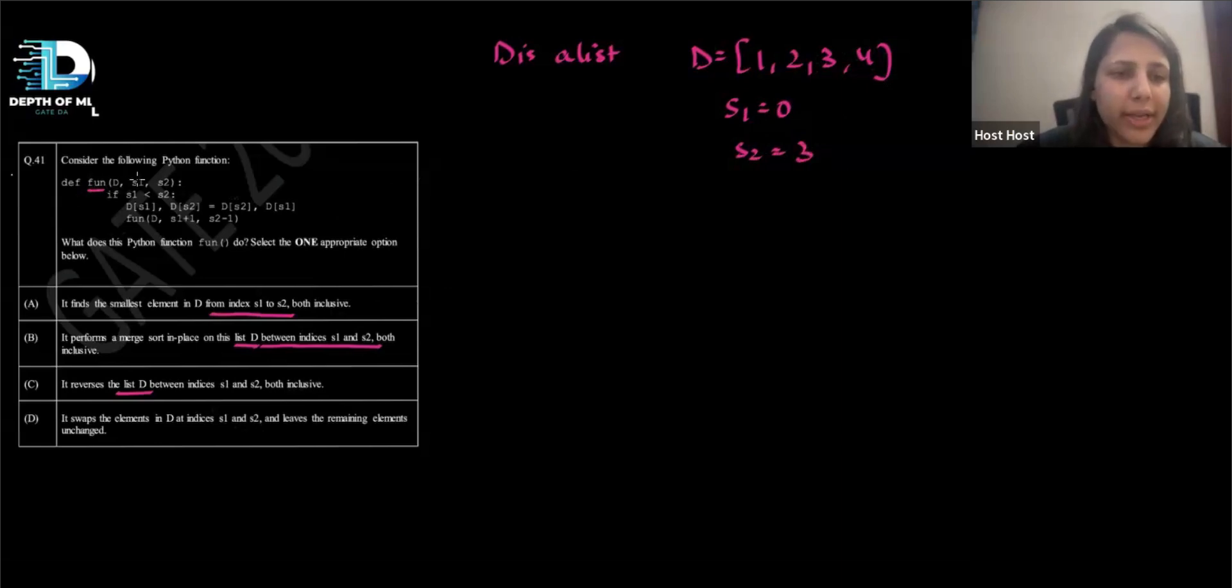So this function D S1, S2. So there is this list, there is this index, start index, and this is end. So it's saying if S1 is less than S2, if the index S1 is less than S2, then do this. What is this doing? D S1, D S2 is equals to D S2, D S1. So this particular operation is basically a swap.